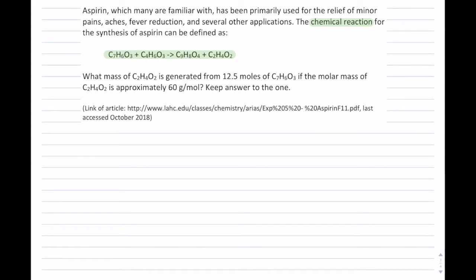Next they ask, what mass of C₂H₄O₂ is generated from 12.5 moles of C₇H₆O₃? So they're asking me to find the mass of this particular molecule, and they give me 12.5 moles of these. Now, they also give me the molar mass of C₂H₄O₂, and that's approximately 60 grams per mole. We're supposed to keep our answer to the one, so we'll do that rounding at the end.